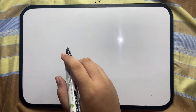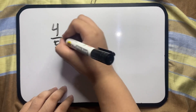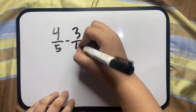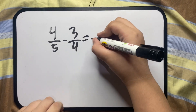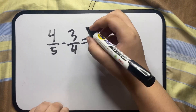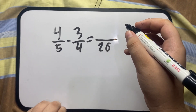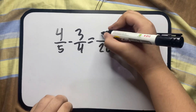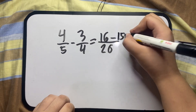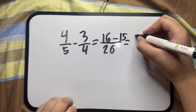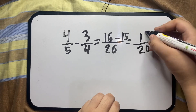Next, subtraction of dissimilar fractions. Let's solve 4 over 5 minus 3 over 4. First, get the LCD of 5 and 4. Then divide the LCD by each denominator and multiply it to the numerator. Then subtract the numerators. Here's the final answer.